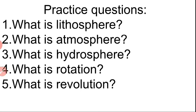Also write the practice questions in your homework notebook. What is lithosphere? The upper uneven surface of the earth — write the examples. What is atmosphere? The layer of air surrounding the earth. What is hydrosphere? Water bodies are called hydrosphere — write the examples. What is rotation? The earth rotates on its own axis and takes 24 hours. What is revolution? The earth revolves around the sun and takes 365 and a quarter days. Watch the video carefully and give the answers. We will see the remaining part in the next class. Thank you.